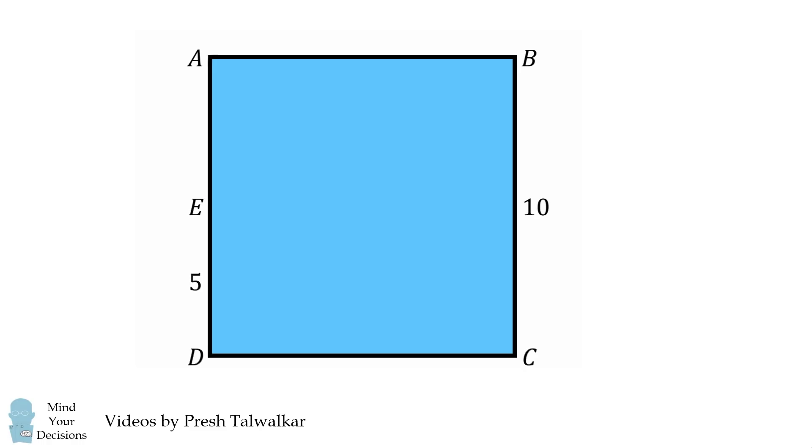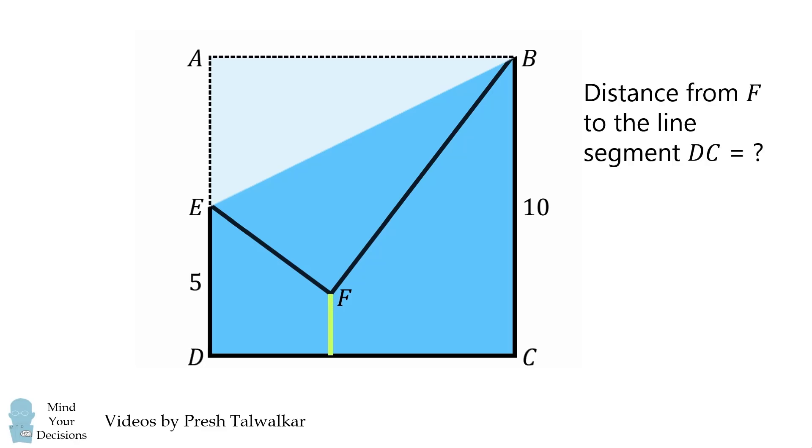Suppose E is the midpoint of the side AD. Fold the square from the vertex A along the line segment EB in such a way that the point A becomes the point F. The question is what is the distance from the point F to the line segment DC?